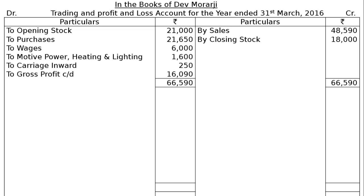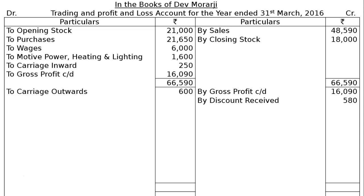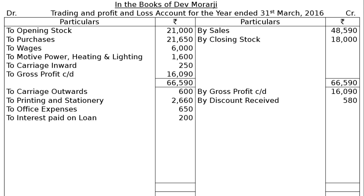The gross profit of Rs 16,090 is carried down to the profit and loss account credit side as 'by gross profit brought down Rs 16,090.' On the credit side we also have by discount received Rs 580 (an income). On the debit side: to carriage outwards Rs 600, to printing and stationery, to office expenses Rs 650, to interest paid on loan Rs 200, to travelling expenses Rs 400, and to legal charges Rs 1,900.